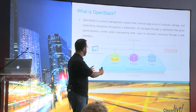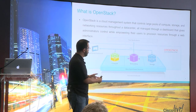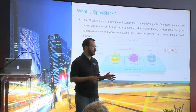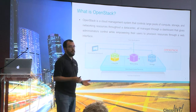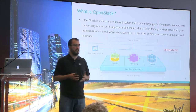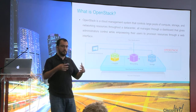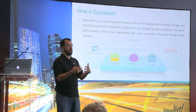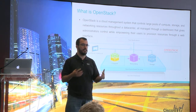Each one of these pillars has a project name. For compute it's called Nova, for networking it's called Neutron, and for storage we have Cinder — and also Swift and other projects. We have a dashboard, a UI, to call all the APIs. What is important is that all these APIs are open, so these projects talk to each other through the APIs. We encourage all developers to use the APIs rather than RPC mechanisms.